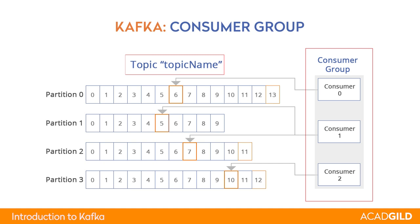One consumer group can read multiple topics, and one topic can be read by multiple consumer groups. For example, Hadoop can read a topic, and any stream processing framework like Kafka Streams, Storm, Spark Streaming, or Stanza can also read the same topic. The same data is available to multiple consumers, and it is up to each consumer how they want to consume it. This makes Kafka very robust in design and interesting in its use cases.